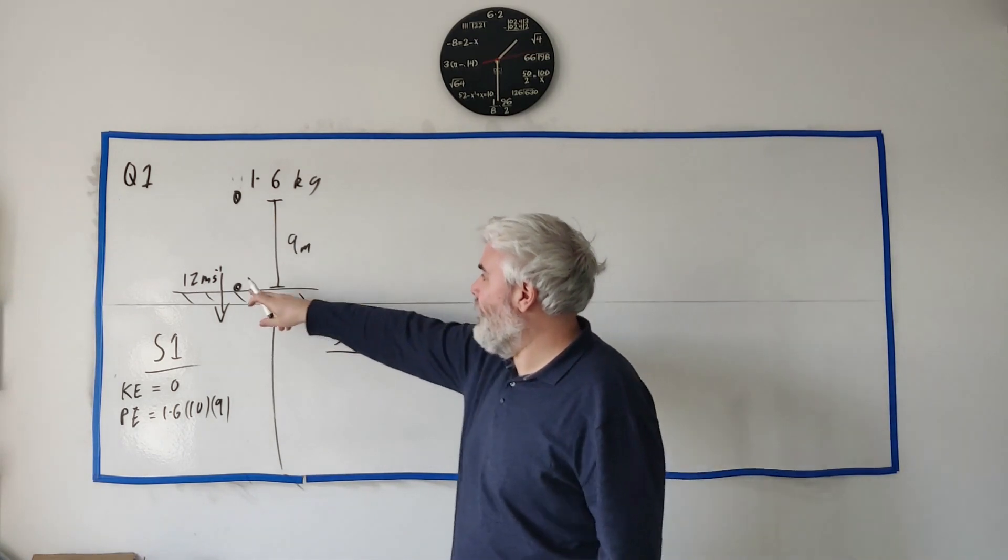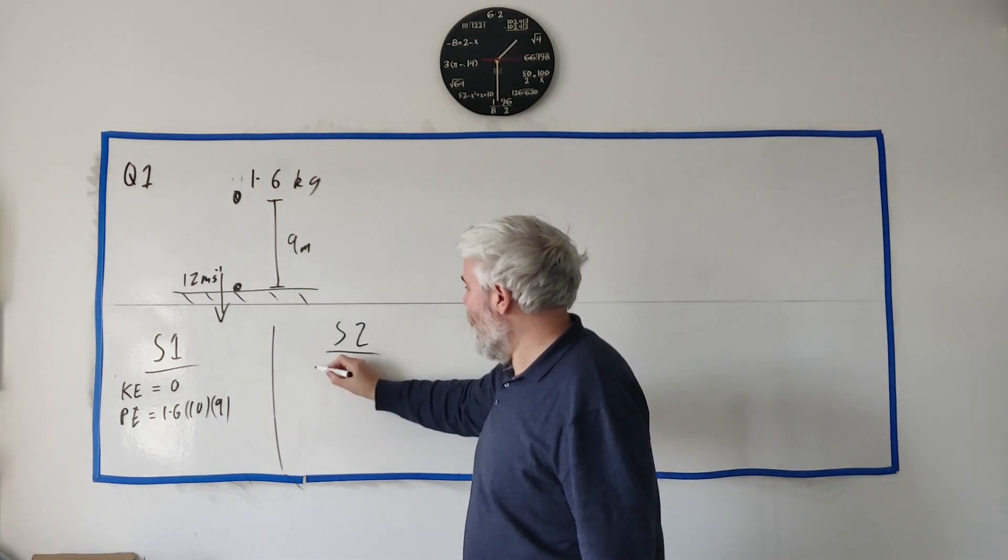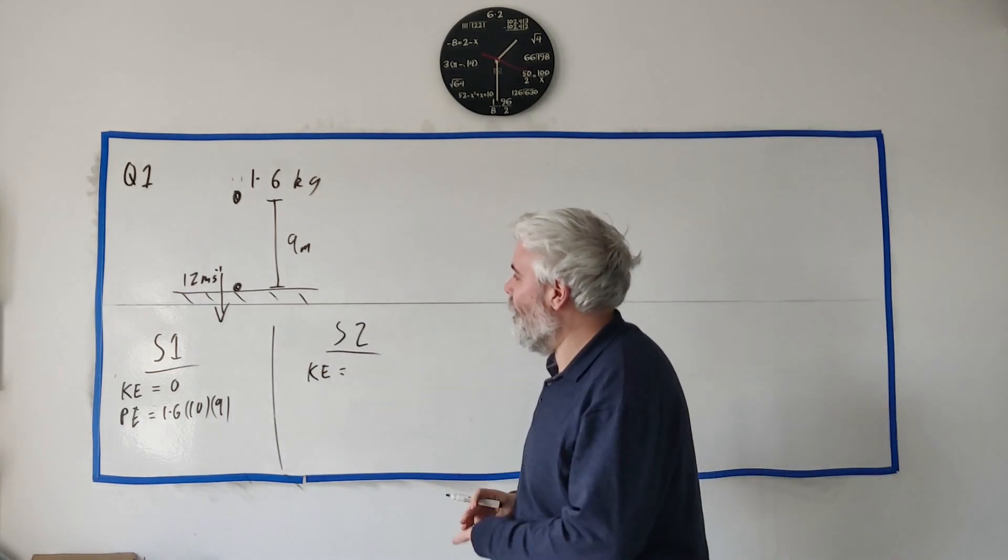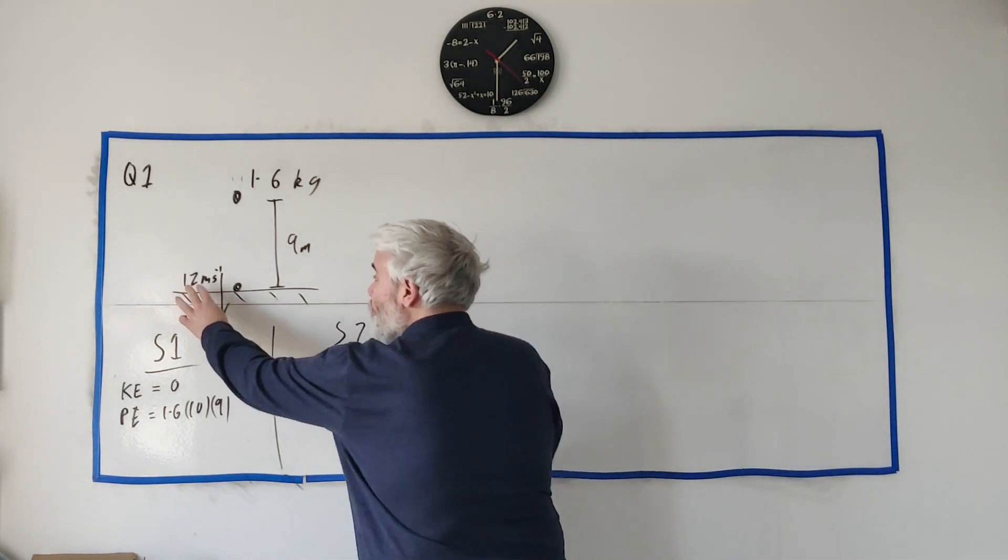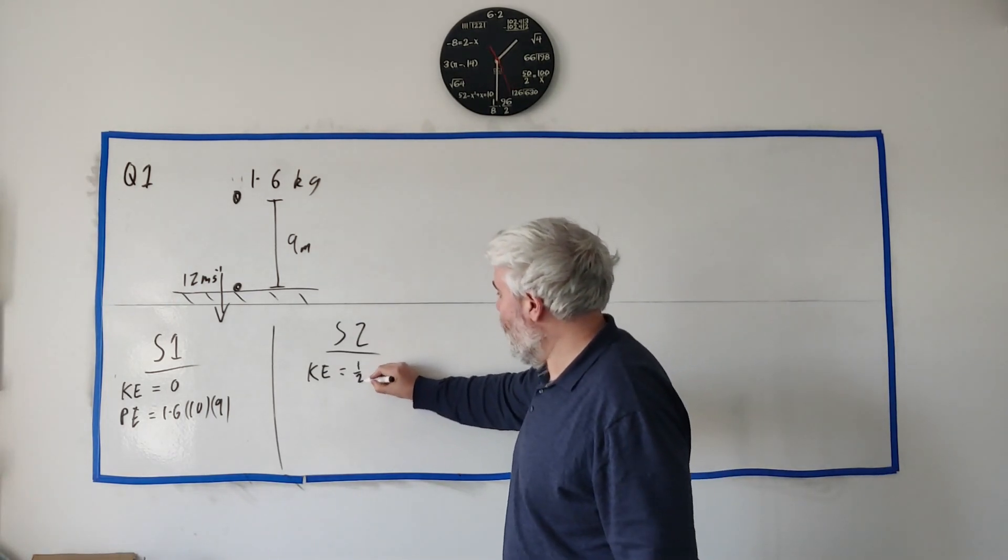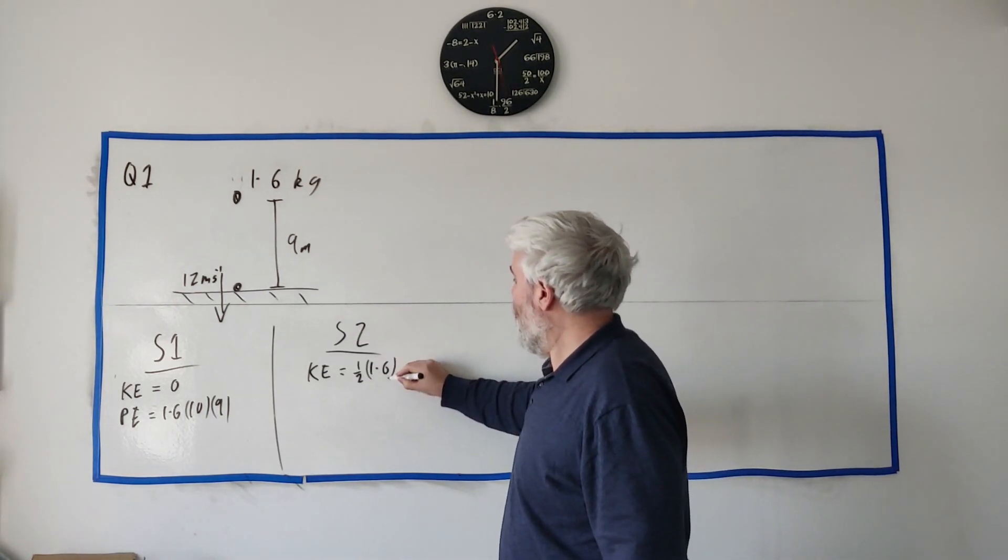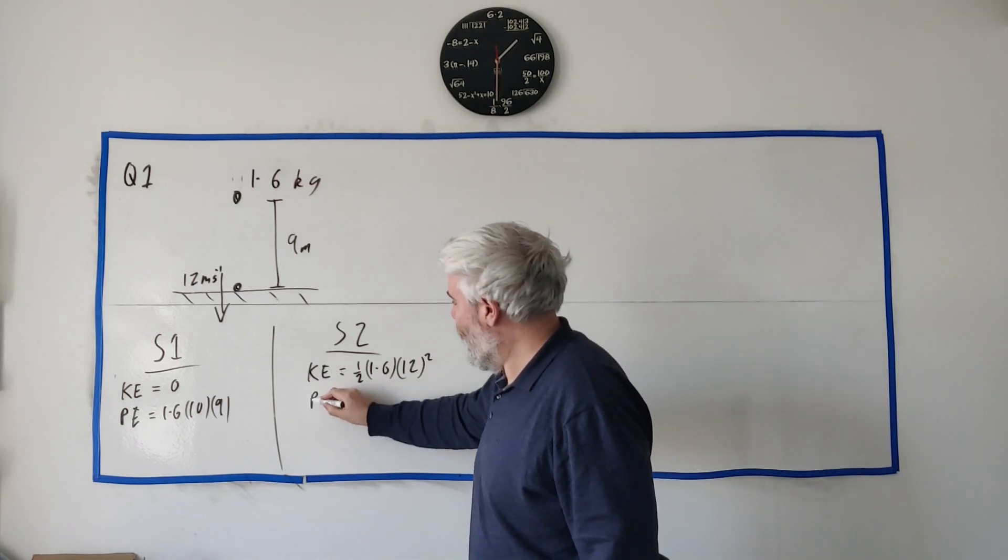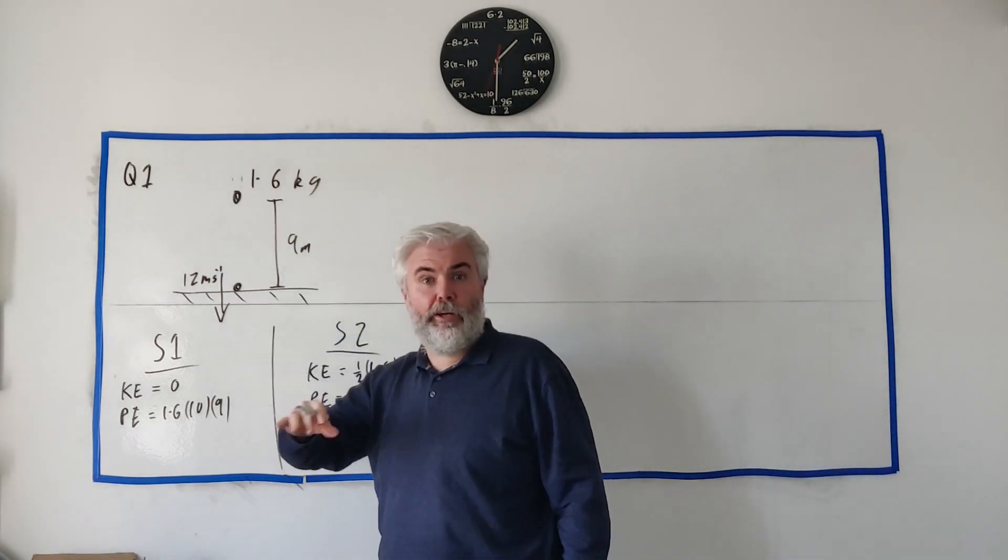At the end here, this state, the kinetic energy is traveling at 12 meters per second so the kinetic energy is now a half m times v squared, 12 squared, and the potential energy is zero because we're at the ground.